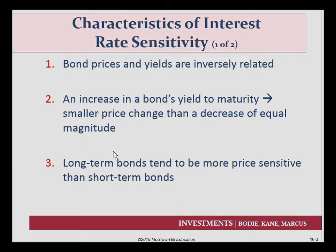Let's think first about interest rate sensitivity. We know bond prices and yields are inversely related. An increase in the bond's yield to maturity leads to smaller price changes than a decrease of equal magnitude. So if a bond has an increase in yield to maturity, the price is going to fall, but that fall will be a smaller amount than the decrease for a similar type of bond. Dependent on the characteristics of bonds, there will be different levels of price changes as interest rates change.